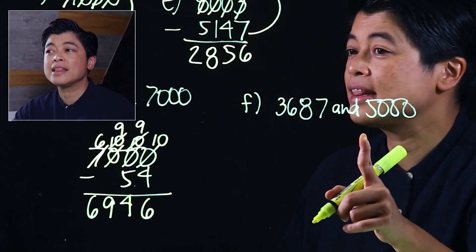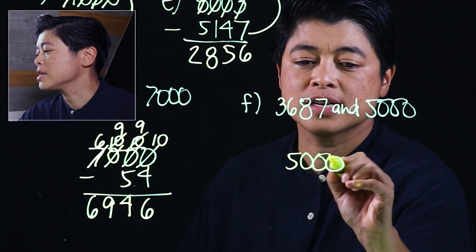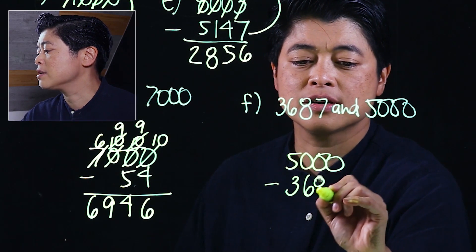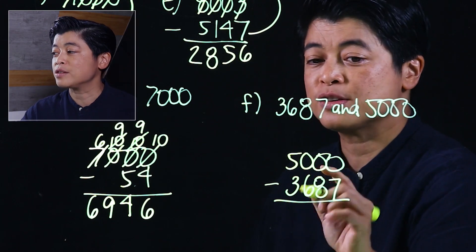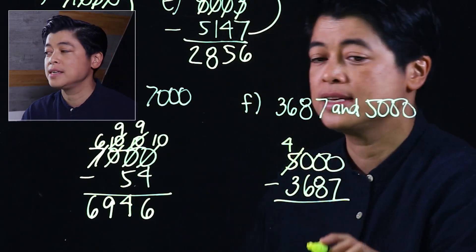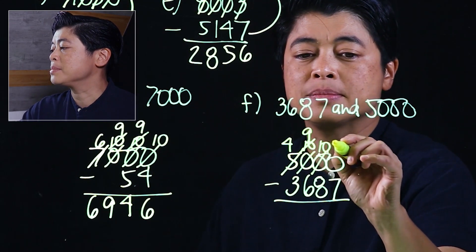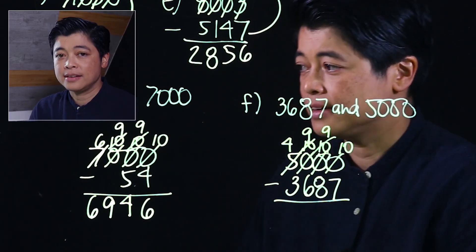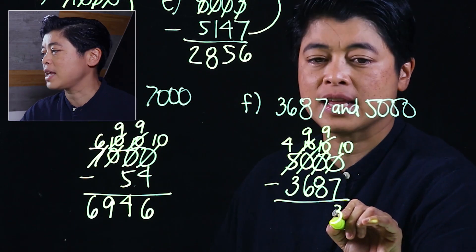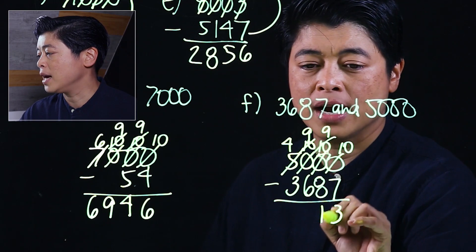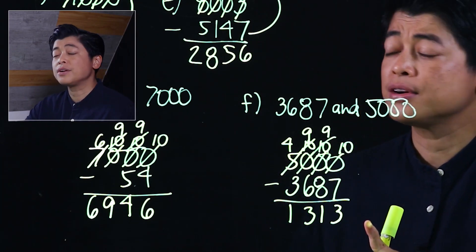The last problem is another subtraction across zeros: five thousand minus three thousand six hundred and eighty-seven. We cannot subtract seven from nothing and cannot borrow from nothing, so we go as far as the thousands place. Zero becomes ten as it's regrouped, this becomes nine, this becomes ten, nine, and ten. Ten minus seven — we need three more to get to ten. Nine minus eight is one, nine minus six is three, making our answer one thousand three hundred and thirteen.